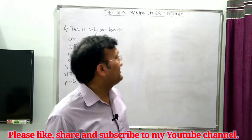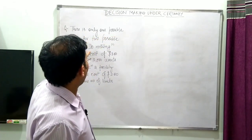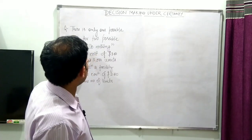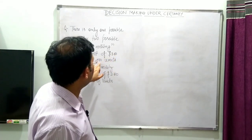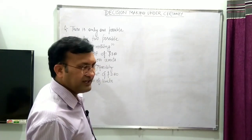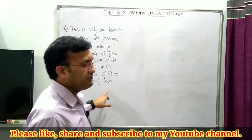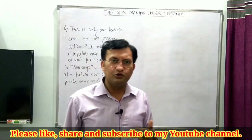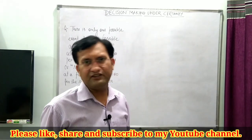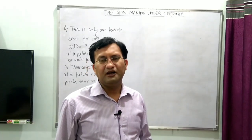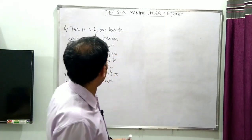Let's understand this concept with one question. There is only one possible event for two possible actions. The first action is do nothing, at a future cost of $3 per unit for 10,000 units. The next action is to rearrange the facility at a future cost of $2.8 for the same number of units. So we have two actions: rearrange the facility, or do nothing and let the system continue as it is.